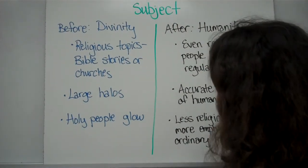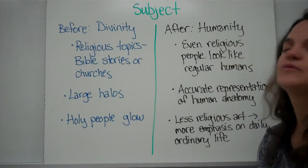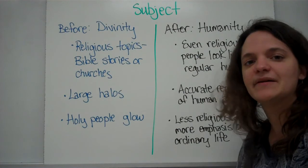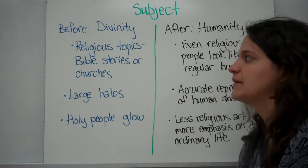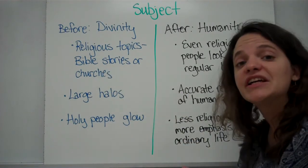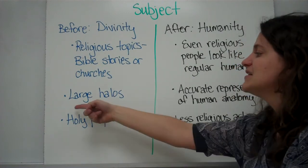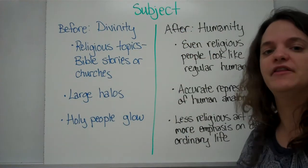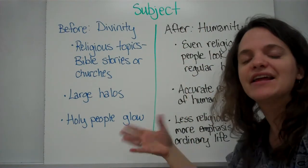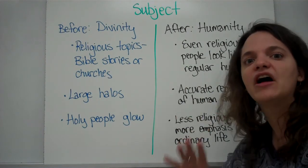The next thing to think about in Renaissance paintings are the subjects. The subjects really changed after the Middle Ages. During the Middle Ages, divinity was the subject — they were holy and religious subjects. Most paintings had religious topics like Bible stories, famous churches, and Mass. They were all holy scenes, and people in the paintings often have large, shimmery gold halos much bigger than the person's head to show they're holy. A lot of times, the holy people in these pictures even glow, literally giving off light in the picture.